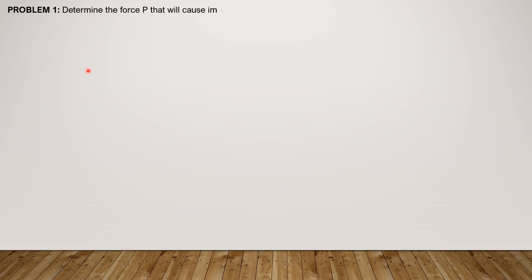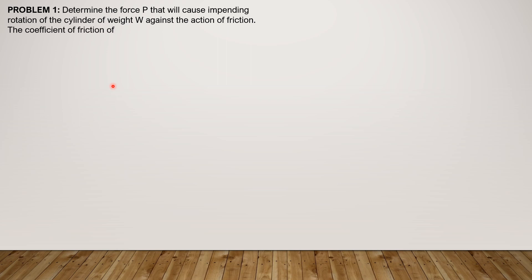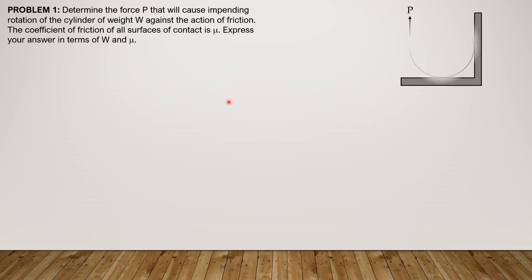Here we go. This is the first problem: determine the force P that will cause impending rotation of a cylinder of weight W against the action of friction. The coefficient of friction at all surfaces of contact is denoted by mu. Express your answer in terms of W and mu. We will call the normal reaction N1.